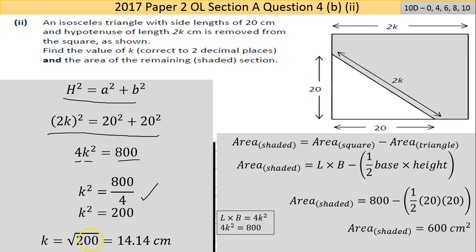Put that through the calculator and to two decimal places that's 14.14 centimeters. That's the figure I'll use in the next section. The area of the shaded area equals the area of the square take away the area of the triangle. If I know the area of that triangle, just take it away from the area we found in part 1.